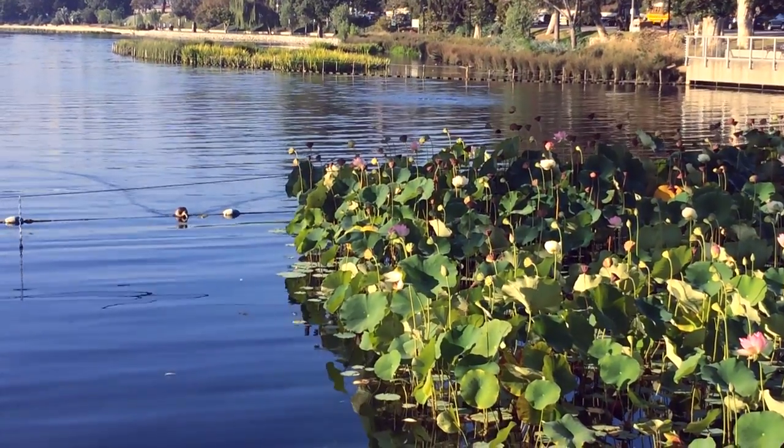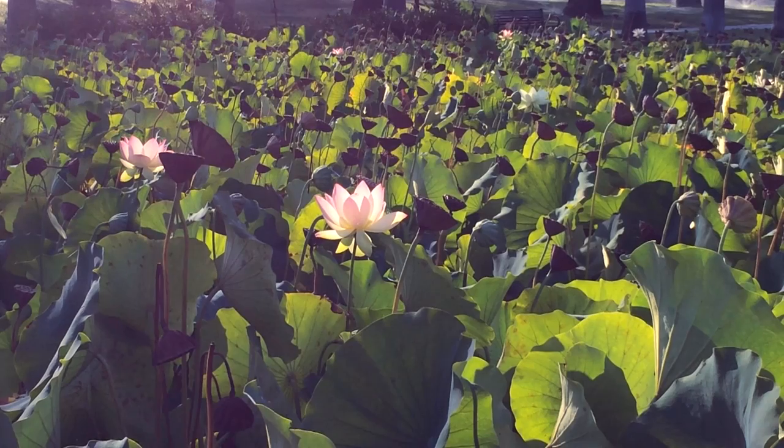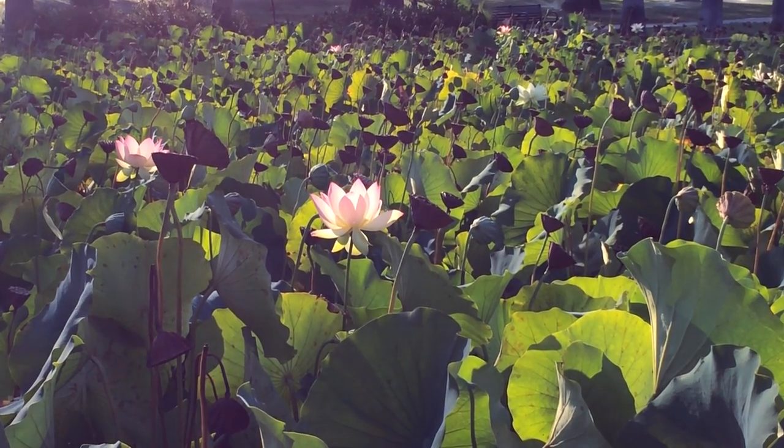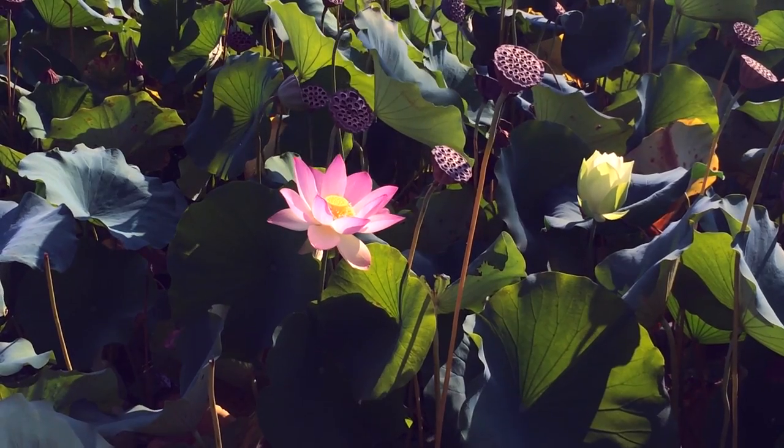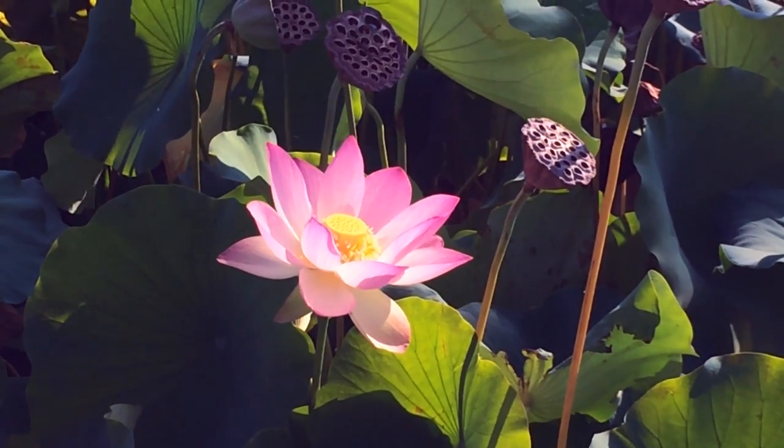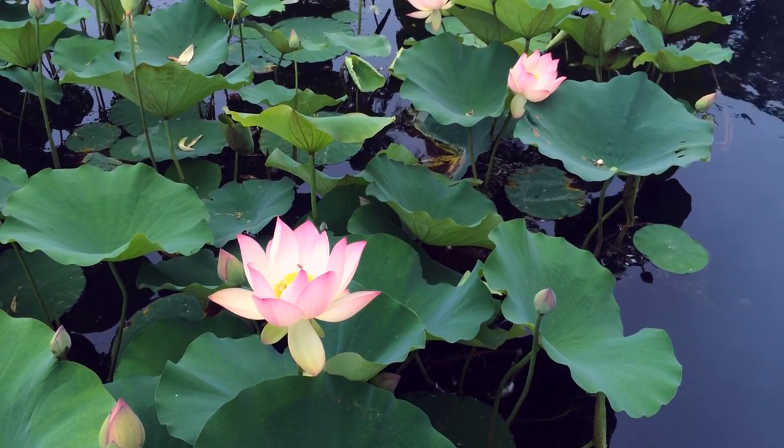Another signature part of Echo Park Lake is the lotus flowers, and there's a lotus festival in the park every year to celebrate the area's Asian heritage. Here's all the colors I'm going to be using for the lotuses, a combination of greens and pinks. The lotuses have been in Echo Park since the 1920s, but they mysteriously died off in the late 2000s and were brought back when the lake was drained.